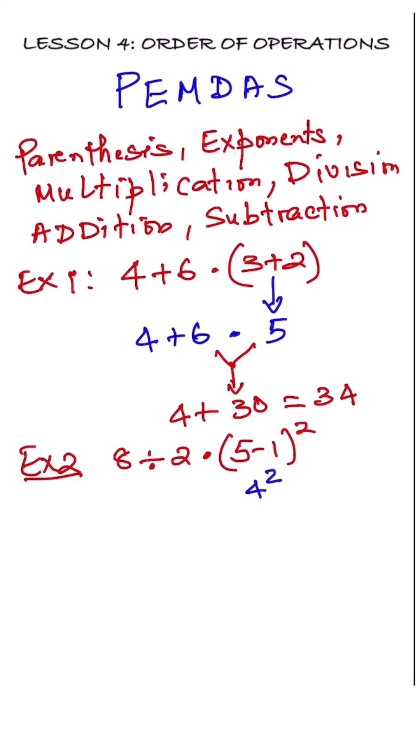Next, exponents. 4 squared is 16. Now we have 8 divided by 2 times 16.